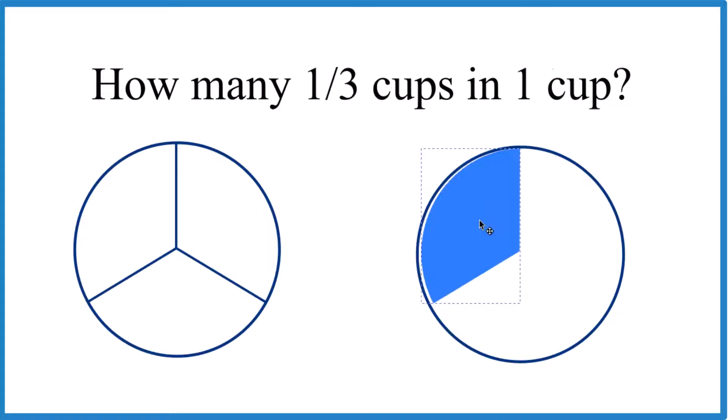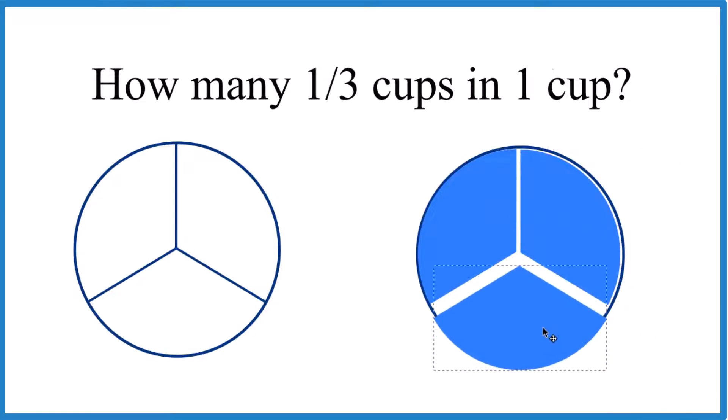You could just put one here, and then here's another third cup, and finally here's another one. Those are each one-third cup, and you can see that it takes three of them to make one cup.